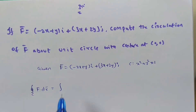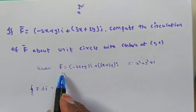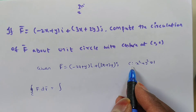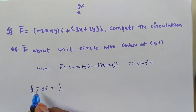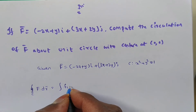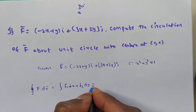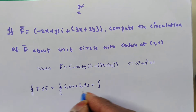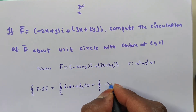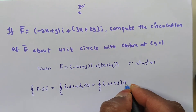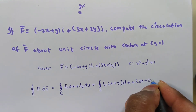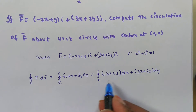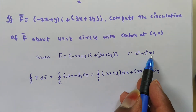The problem is: given f̄ = (-2x + y)î + (3x + 2y)ĵ and the closed curve x² + y² = 1, we evaluate the integral over C of f̄ · dr̄, which equals the integral of f₁ dx + f₂ dy. Since it is in the xy-plane, dz is not present. So we have the integral over closed curve C of (-2x + y) dx + (3x + 2y) dy.